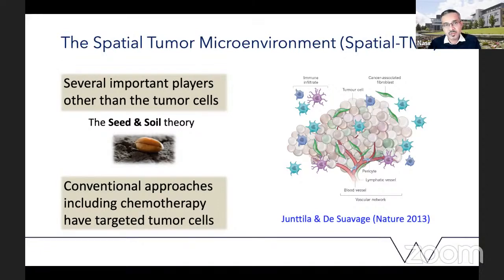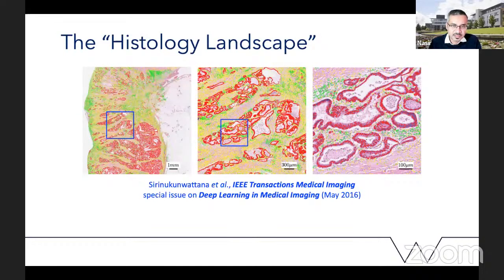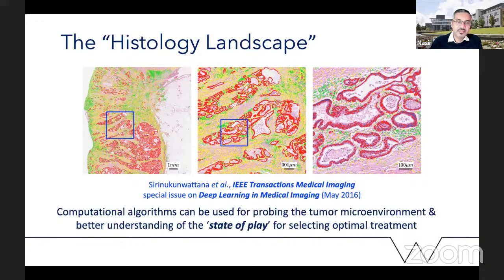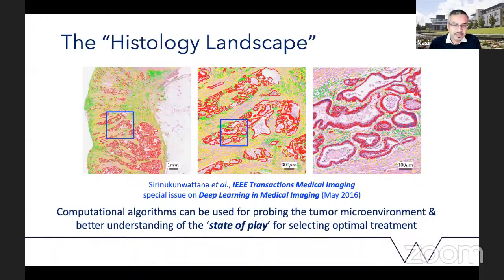We're only beginning to understand why immunotherapy works, for which group of patients it works, and how to avoid serious side effects. I really believe that the bottom-up machine learning approach lends itself quite nicely to profiling this histology landscape to the deepest level — at the cell nucleus level — and being able to profile the tumor microenvironment to better understand the state of play for selecting optimal treatment. In that context we have been looking at various different problems for various different cancers, trying to understand the tumor microenvironment and develop digital markers.